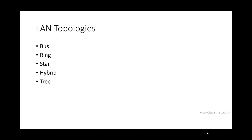By the topology of a network we mean the way in which the network devices are connected to each other, without regard for factors such as link speed or distances. There's a lot we can learn from topology alone. The main topologies are: bus, ring, star, hybrid, and tree.